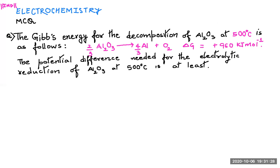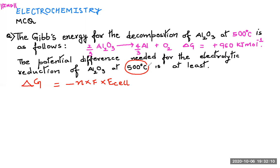The first thing you should know is the relation: change in Gibbs energy equals the product of moles of electron, the Faraday charge, and E cell — with a negative sign. That is, ΔG = −nFE_cell. Since the temperature is 500°C, which is not standard condition (standard is 298 K, i.e., 25°C), we are not using ΔG° or E° here. The equation we use is ΔG = −nFE_cell.